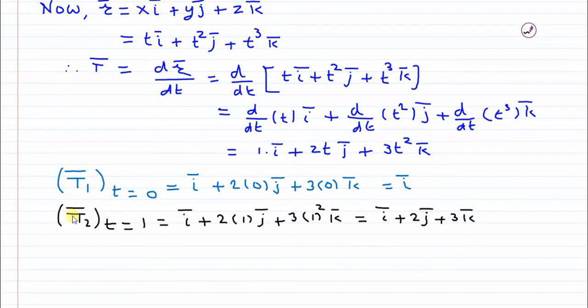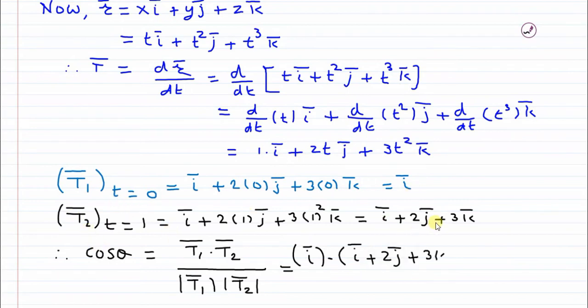So these are the two tangent vectors, and as we have seen earlier, the angle between them can be found out by using the concept of dot product. So it is t1 bar dot t2 bar divided by mod of t1 bar into mod of t2 bar. So substitute the values of this vector. T1 is i only and t2 is i plus 2j plus 3k.